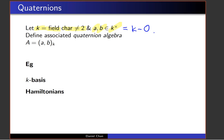With this field and these two elements, we can define something called the quaternion algebra, which is our non-commutative analog of a quadratic field extension. This algebra is a K-algebra — a ring where K sits inside the center — and the notation for it is (A,B) with subscript K. It's defined as follows: we look at the non-commutative polynomial ring in two variables X and Y, and factor out by various relations.